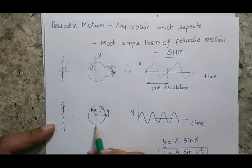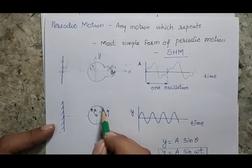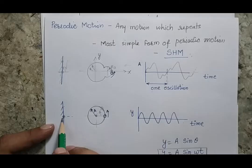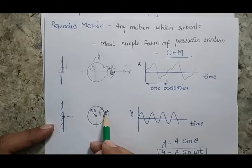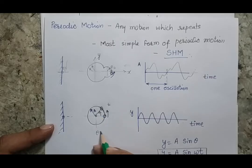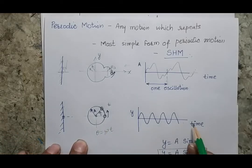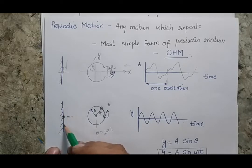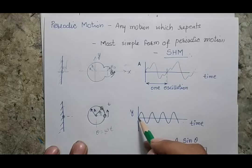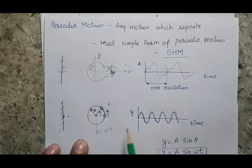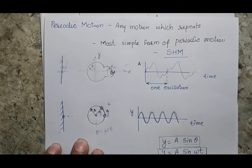Now consider another motion where the same ball is revolving on a circular path about a fixed point. If I again see the projection of this ball on a vertical wall, the projection starts at a position and as the ball moves along the circular path, at time t the angle traveled by the ball is theta = omega·t, where omega is the constant angular velocity. Plotting the projection amplitude versus time, the motion is a simple sinusoidal motion.